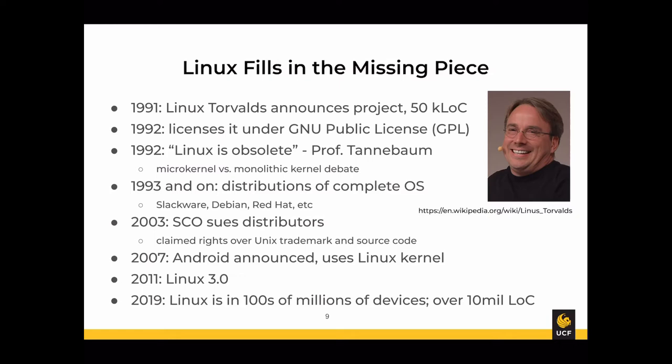In 1992, in the very early stages of Linux, Professor Tannenbaum said 'Linux is obsolete,' related to the microkernel versus monolithic kernel debate. By 1993, we already saw complete OS distributions — Slackware, Debian, Red Hat — bundling not only the Linux kernel but all the GNU tooling needed to operate a complete operating system.